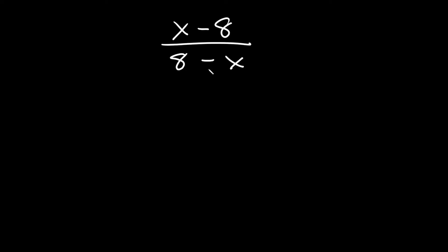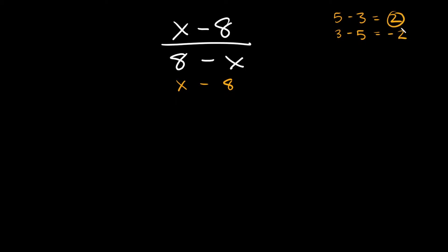Before we can simplify this, we have to basically flip the two numbers. We have to have the x here and the 8 here. But let's be clear — we can't just write it as x minus 8. 8 minus x and x minus 8 are not the same thing. For example, 5 minus 3 equals 2, but if I flip it and write 3 minus 5, that's negative 2. So it's the same thing here.